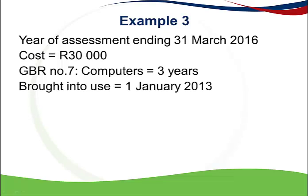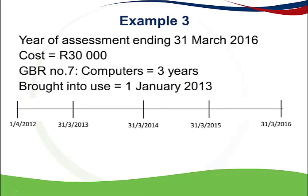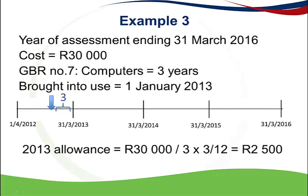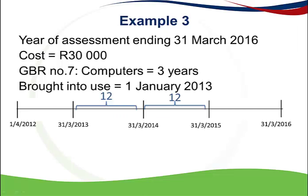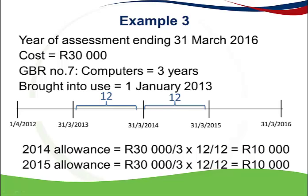In another example, the year of assessment is still 2016, but the asset was brought into use on 1 January 2013. Each year of assessment in which the asset was used must be plotted. When brought into use on 1 January 2013, it was only used for 3 months in the 2013 year of assessment, giving an allowance of 30,000 divided by 3, apportioned for 3 months — which is 2,500 Rand. For the 2014 and 2015 years of assessment, the asset was used for the full year, so no apportionment is needed and the full 12-month allowance is claimed.